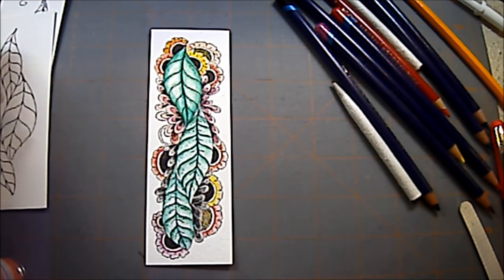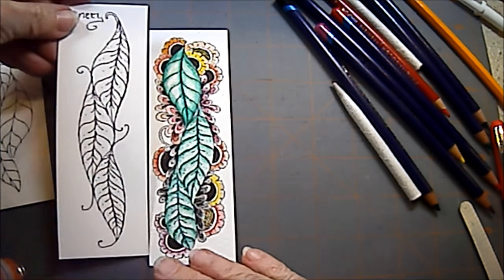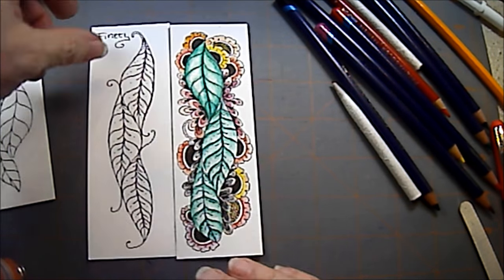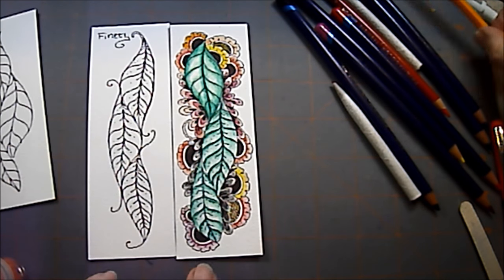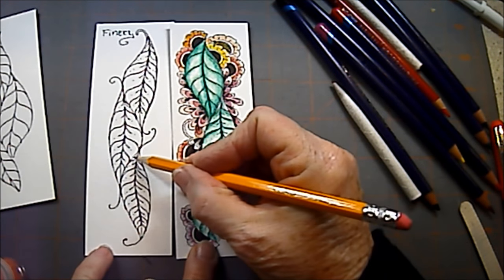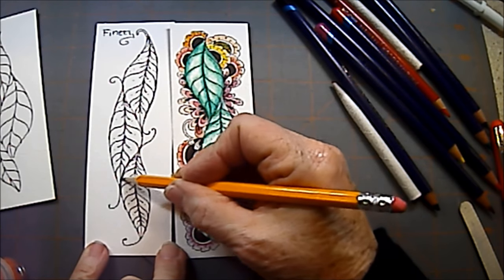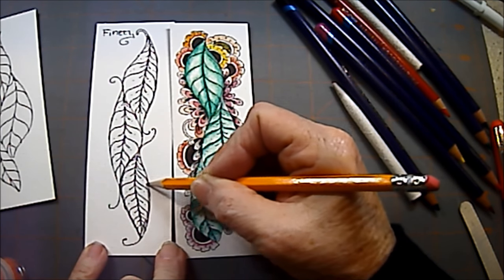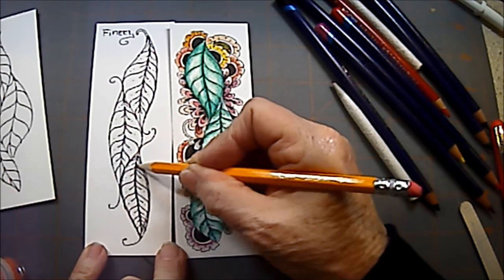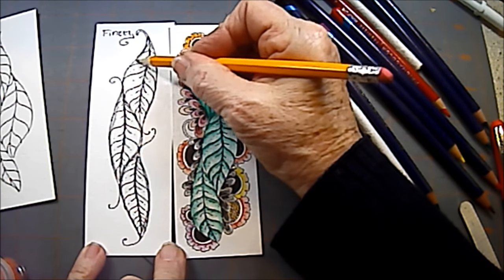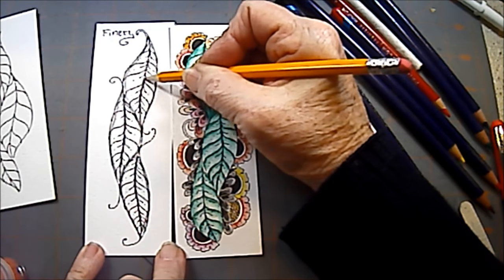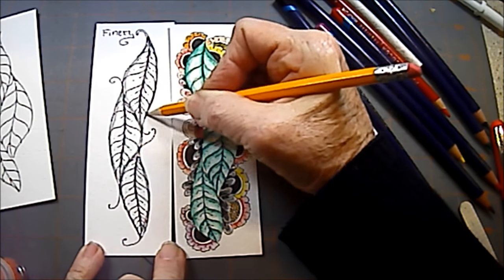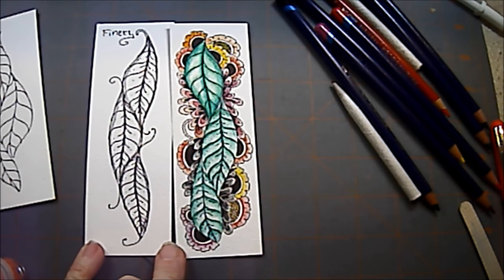There we have our little bookmark colored with colored pencils. I hope you enjoyed Finery. It is a great tangle. There it is, unshaded. If I were to shade it with my pencil, I would just come and shade just with my graphite. To be honest, I'm a real fan of just the gray and white.